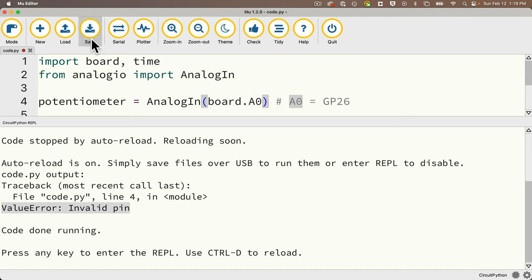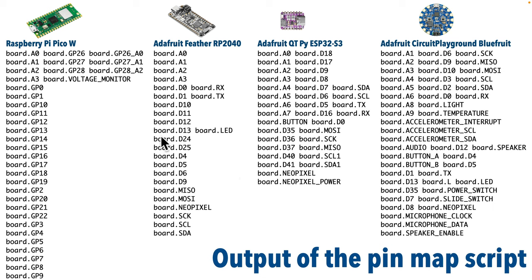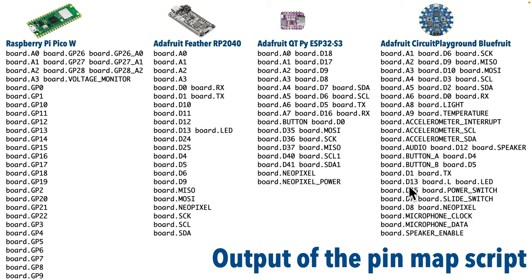In our lessons, I'll always point out when a device needs an analog pin. Now if we take a look at this slide, we also see that there are some other aliases for different functions on different boards. The Feather RP2040 board has board.D3 aliased as board.LED, so that blinks the LED light — we did that in the prior lesson. The CPB can get its LED light with board.D13, board.LED, or even just board.L.